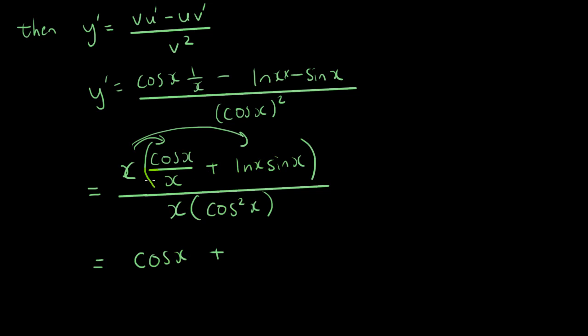Now we have x times ln x sin x on top. In the bottom, we have x cos squared x. There's no easy way to make this expression any simpler than it is.